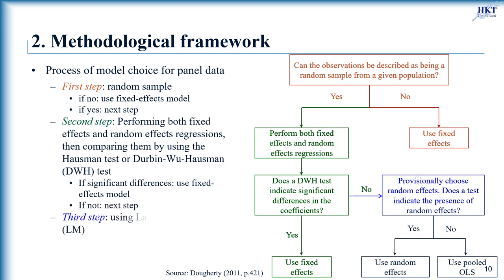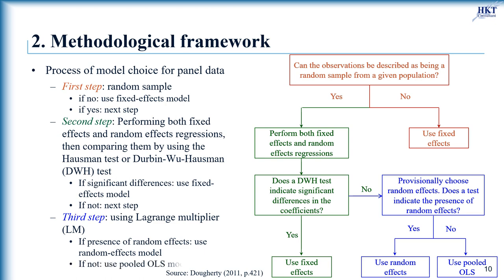For the third step, the Lagrange multiplier test is used to decide if the random effects or pooled OLS model is suitable. The null hypothesis in the LM test is that variances across entities are zero — that is, no significant difference across units. If the LM test indicates the presence of random effects, the random effects model is chosen; otherwise pooled OLS is the final decision.